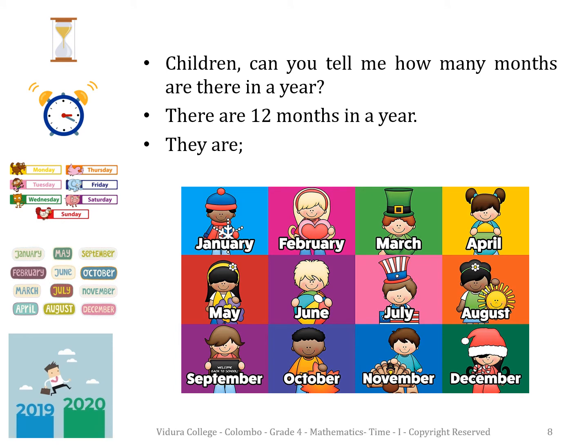Children, can you tell me how many months are there in a year? Yes, there are 12 months in a year. They are January, February, March, April, May, June, July, August, September, October, November, and December.